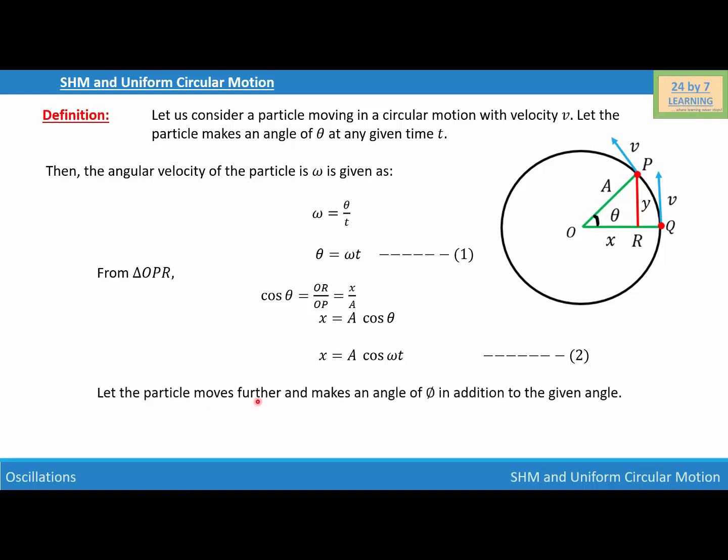Now let the particle move further and make an angle of phi in addition to the given angle. So basically the particle is moving further and the particle is going away from point p to some point right here. And let that angle will be the additional angle and the magnitude of that angle will be phi. Then the displacement is given as x is equal to a cosine omega t plus phi. And let this is our equation number three. And this is how we can find the displacement equation for a simple harmonic motion.